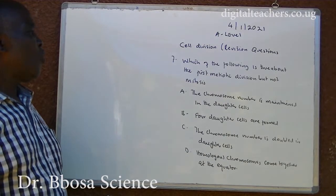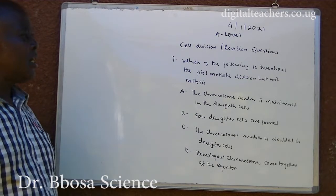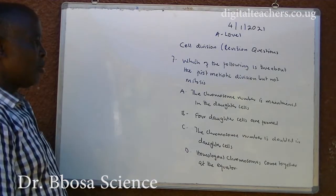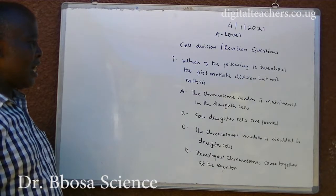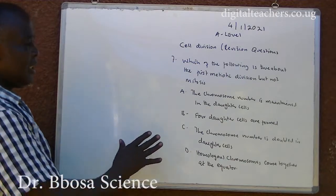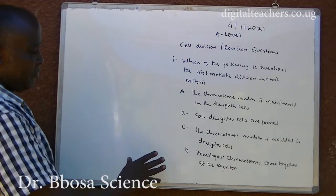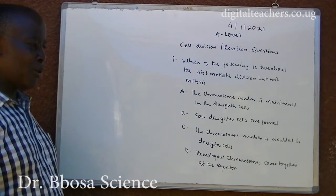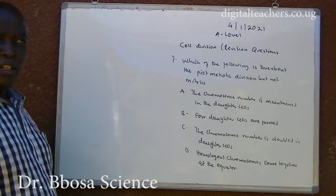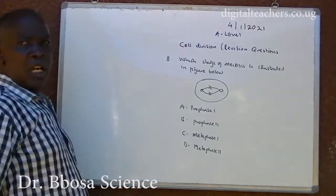Number 7. Which of the following is true about the first meiotic division? A. The chromosome number is maintained in the daughter cells. B. Four daughter cells are formed. C. The chromosome number is doubled in the daughter cells. D. Homologous chromosomes come together at the equator. You can pause and answer. The answer is D.